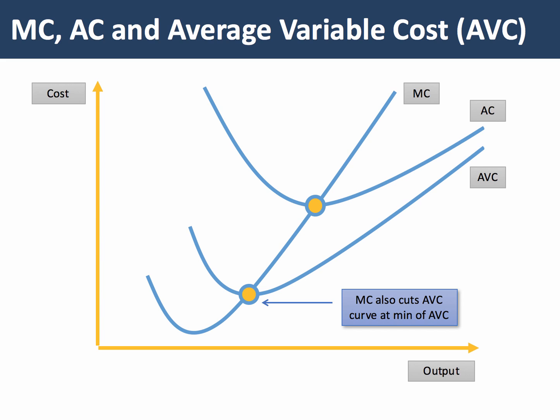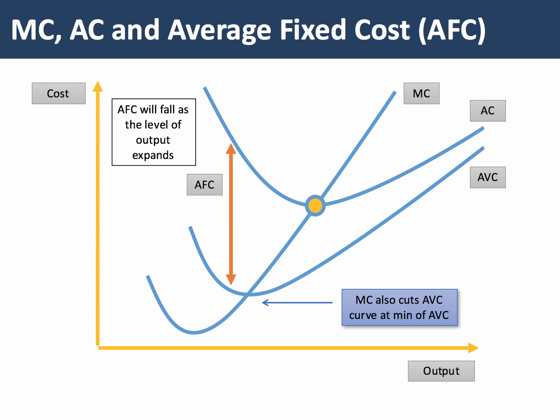We can also show average fixed cost on this diagram — this is the traditional family of short-run cost curves. Fixed costs don't depend on output; total fixed costs are constant. So the average fixed cost is simply the vertical distance shown here between variable cost and total cost — that is, AVC to AC is the average fixed cost.